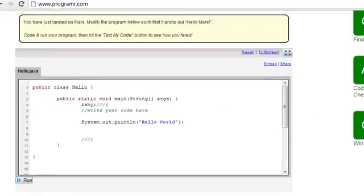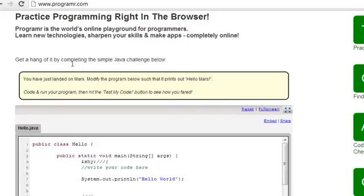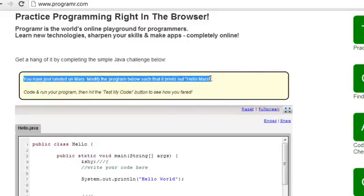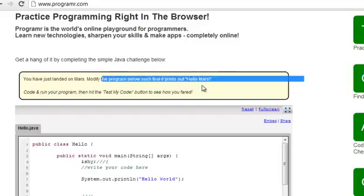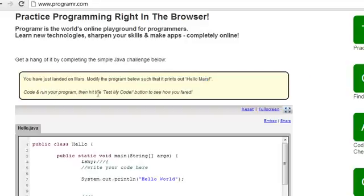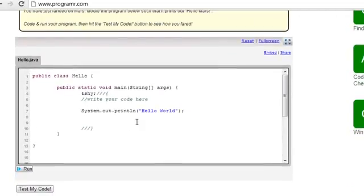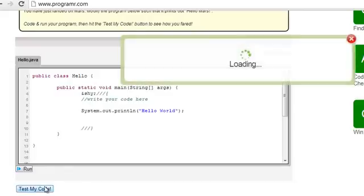And just remember that you have to write your instructions inside the main. So, now let us see what is written here. They say that you have just landed on mars. Now, you have to modify the program below such that it prints out hello mars. So, let us first try to submit it with hello world and click on test my code.